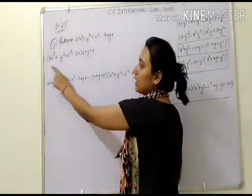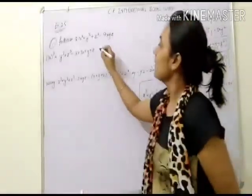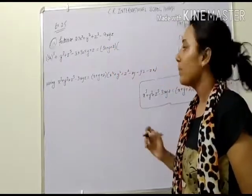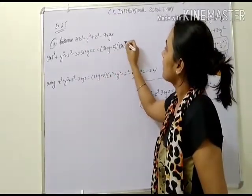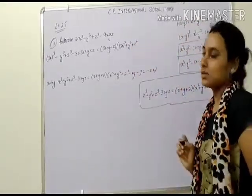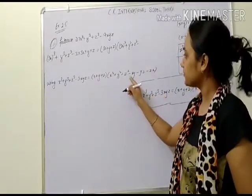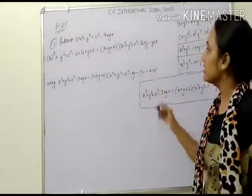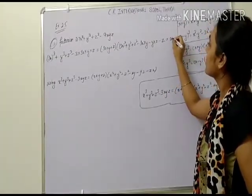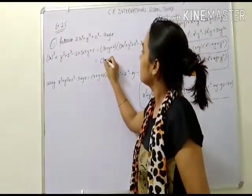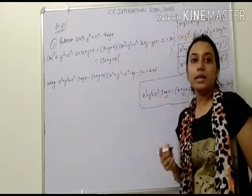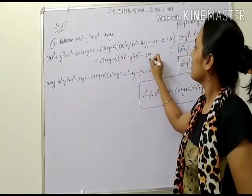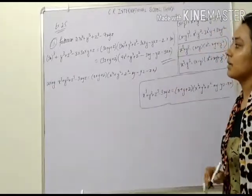So the answer is 3x plus y plus z, into 3x whole squared plus y squared plus z squared minus 3x into y minus y into z minus z into 3x. Simplifying: 3x plus y plus z, into 9x squared plus y squared plus z squared minus 3xy minus yz minus 3zx. This is your required answer.